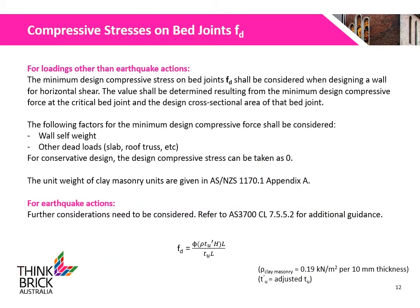The minimum design compressive stress on bed joints, FD, shall be considered when designing a wall for horizontal shear. The value shall be determined resulting from the minimum design compressive force at the critical bed joint and the design cross-sectional area of that bed joint. Factors such as the wall's self-weight and other dead loads such as slabs or roof trusses shall be considered when determining FD.